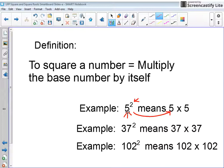And the same thing here. The base number is 37 and we multiply it by itself according to the exponent. We multiply 37 by itself 2 times, so 37 times 37. And likewise, the base number 102 multiplied by the exponent 2, or 102 squared, means 102 times 102.